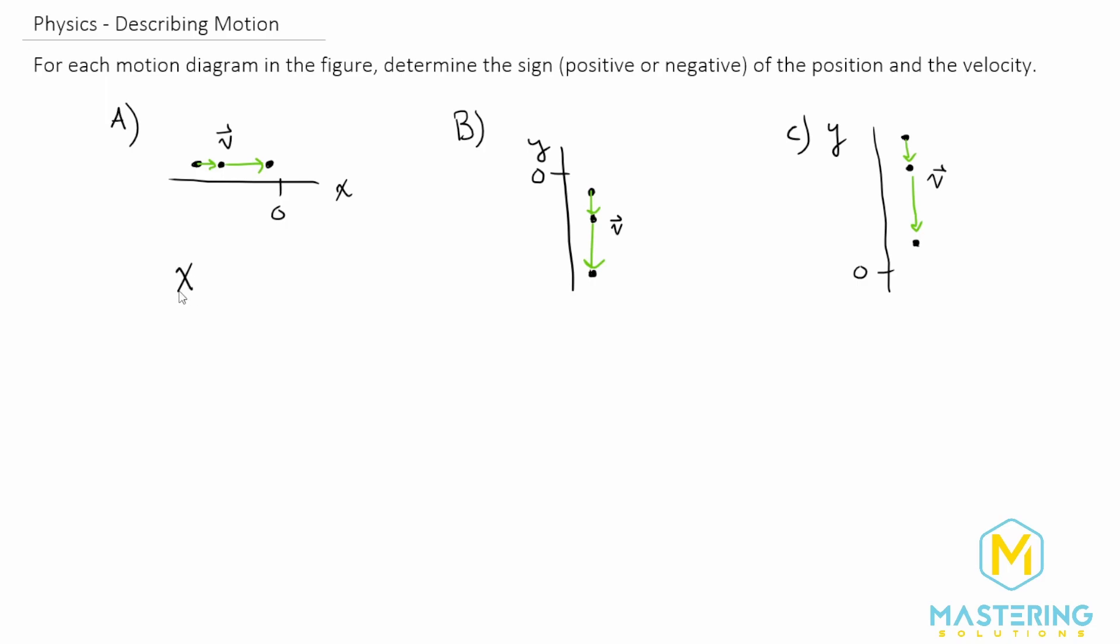So for part a, the position will be x and the velocity of course is v. Right here is zero and we are to the negative side of the x-axis, and all of the dots are on that side, so all of them will have a negative position.